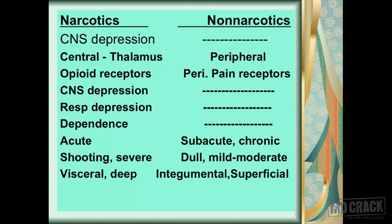Integumental structures include skin, bones, joints, tendons, ligaments, and bursa — so non-narcotics are mainly useful for a superficial kind of pain. Narcotics include morphine-related drugs, and non-narcotics is the chapter we are discussing today — NSAIDs.